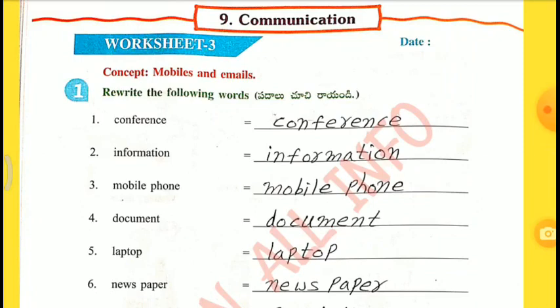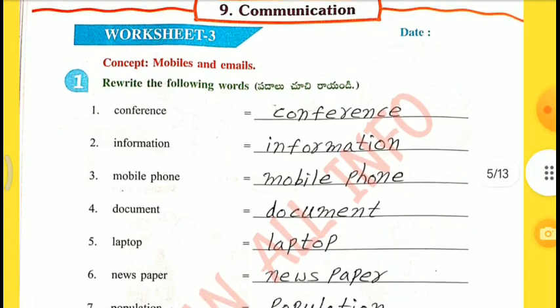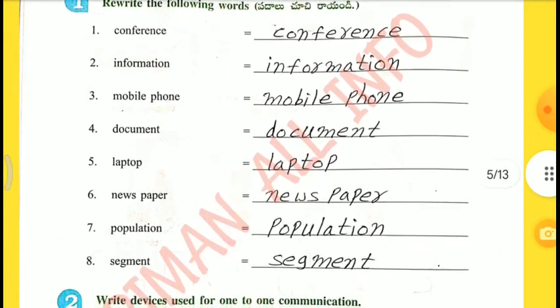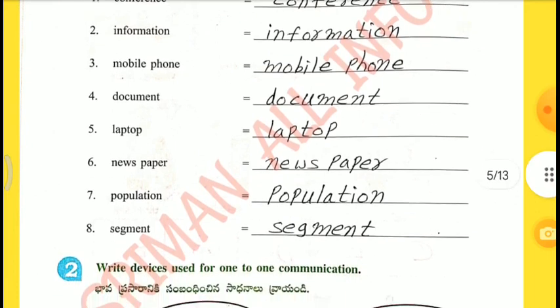5th one is B — Mobiles and Emails. Rewrite the following words: conference, information, mobile phone, document, laptop, newspaper, population, segment.